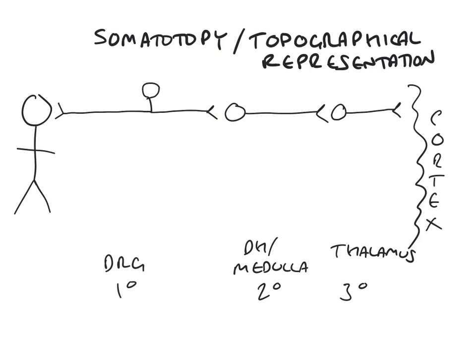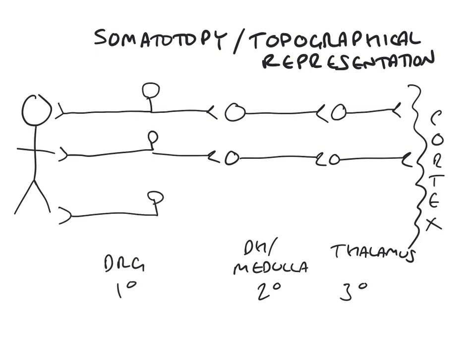We've got three orders of neurons, and we've talked about the pathway going from the head. The upper limb has got the same kind of thing going on — there's the second-order neuron and third-order neuron to cortex. And the lower limb has got the same broad arrangement. What you can see from this is that this system is really nicely regimented, well-ordered, and logical.